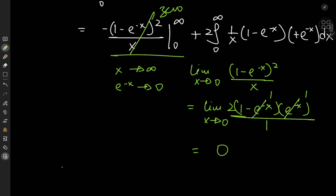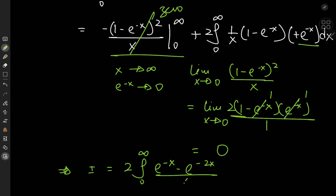All that implies that i equals twice the integral from 0 to infinity of — multiplying out this exponential term — (e to the negative x minus e to the negative 2x) divided by x dx.